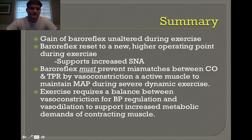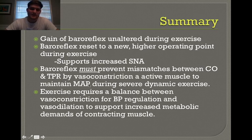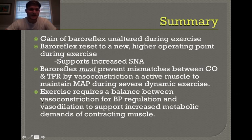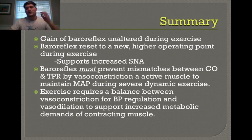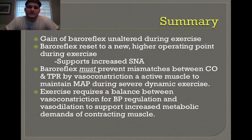During severe dynamic exercise, we need to prevent a mismatch between cardiac output and TPR. When cardiac output is at its limit and inactive regions are already vasoconstricted, the body vasoconstricts active skeletal muscle to maintain mean arterial pressure — but this only occurs during maximal activity as a severe stimulus. Ultimately, all exercise requires a balance between vasoconstriction for blood pressure regulation and vasodilation to support the increased metabolic demands of contracting muscle, ensuring motor units receive sufficient oxygen to sustain physical activity.